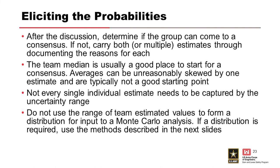In most cases, following the discussion, the team can usually reach some kind of consensus. The median value of the team is usually a good place to start — the median is the measure of central tendency of a small data set, whereas the mean or average can be unreasonably skewed by one estimate. Not every single estimate needs to be captured by the uncertainty range. If the team cannot come to consensus, it'll be necessary to carry both or multiple estimates through the event tree and document the reasons for both, seeing how sensitive the end result is to those different probabilities. We don't want to use the team's range to form a distribution for Monte Carlo analysis — if a distribution is required, use the methods described in the next slides.